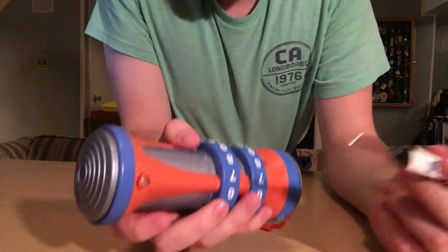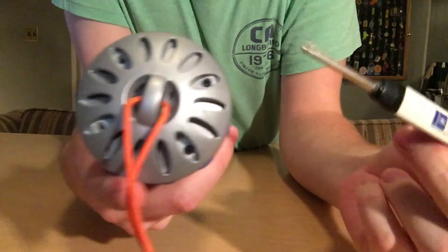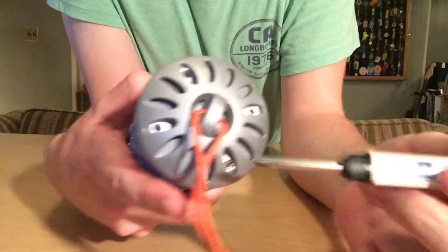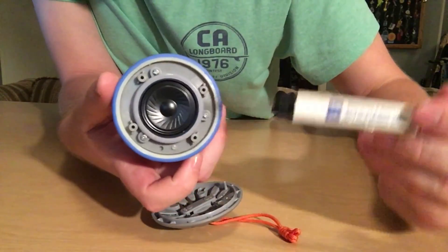First we're going to take out the batteries by unscrewing here. Next we move to the speaker and we're going to unscrew the four screws around here. Then take out these three screws.